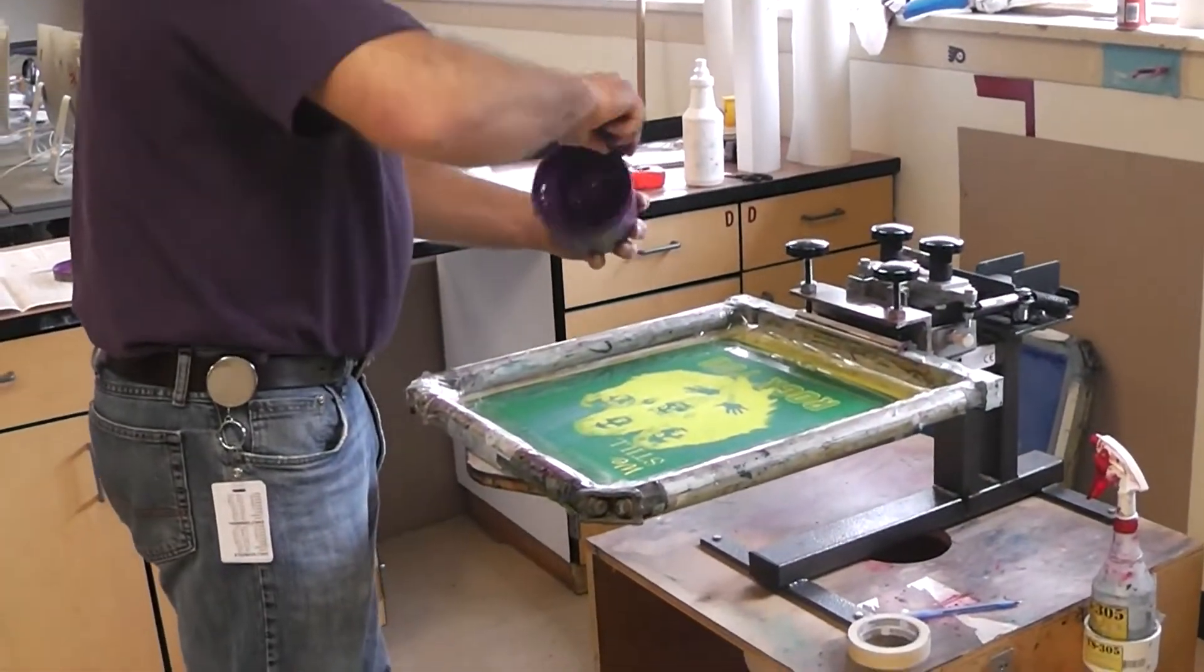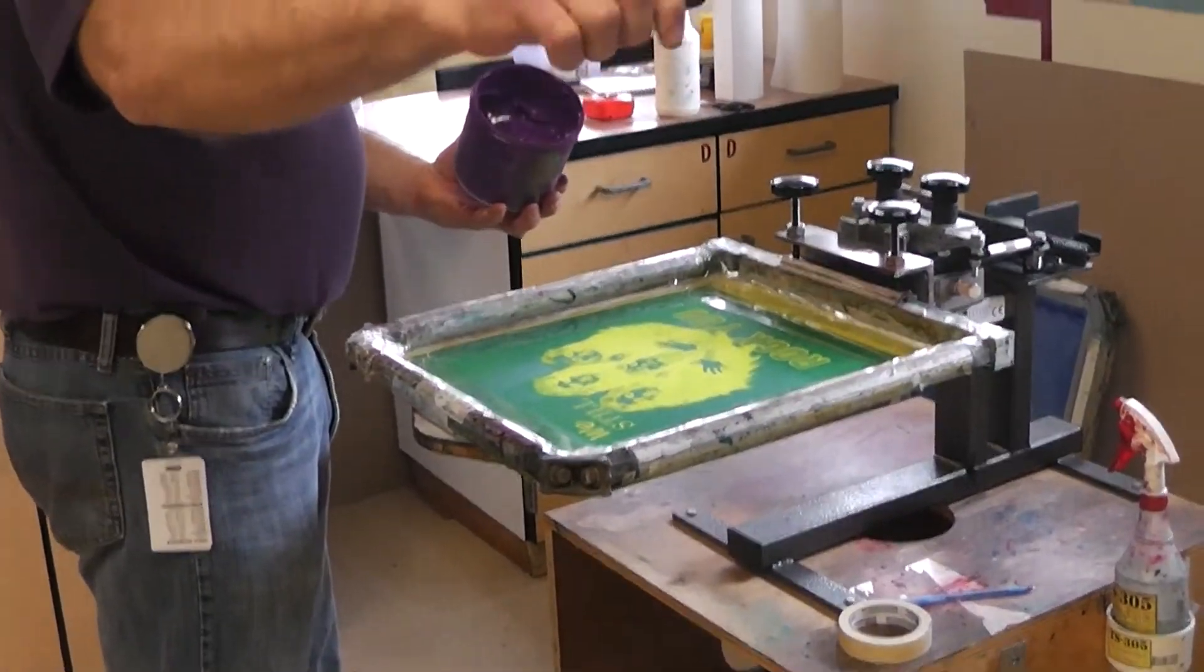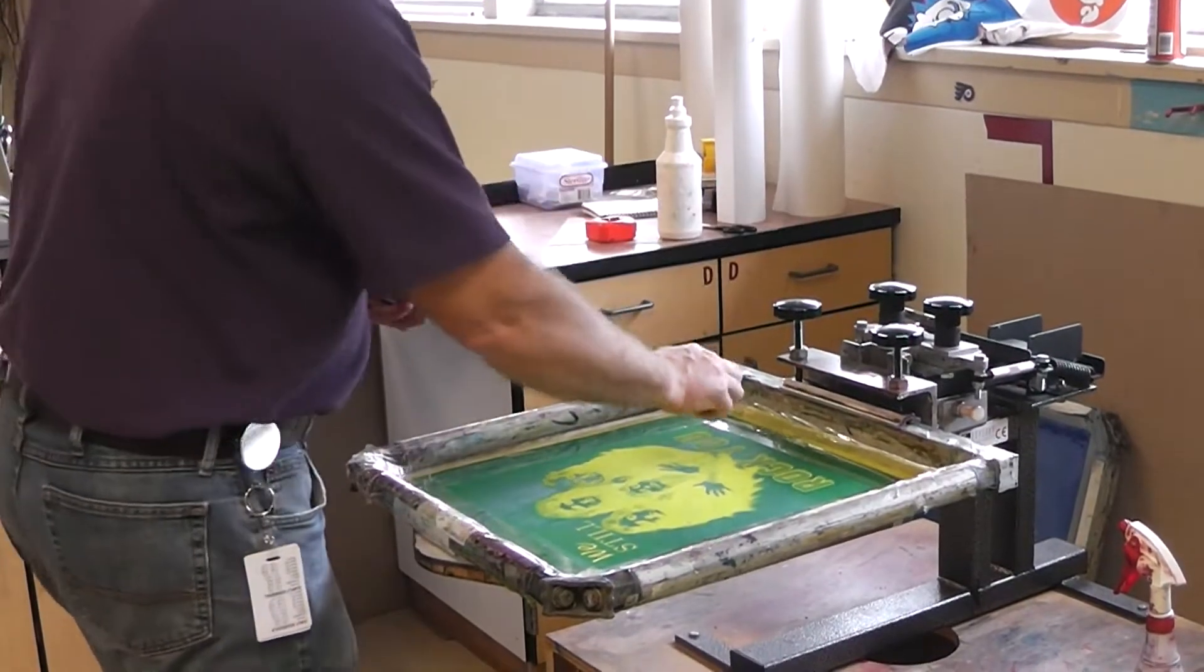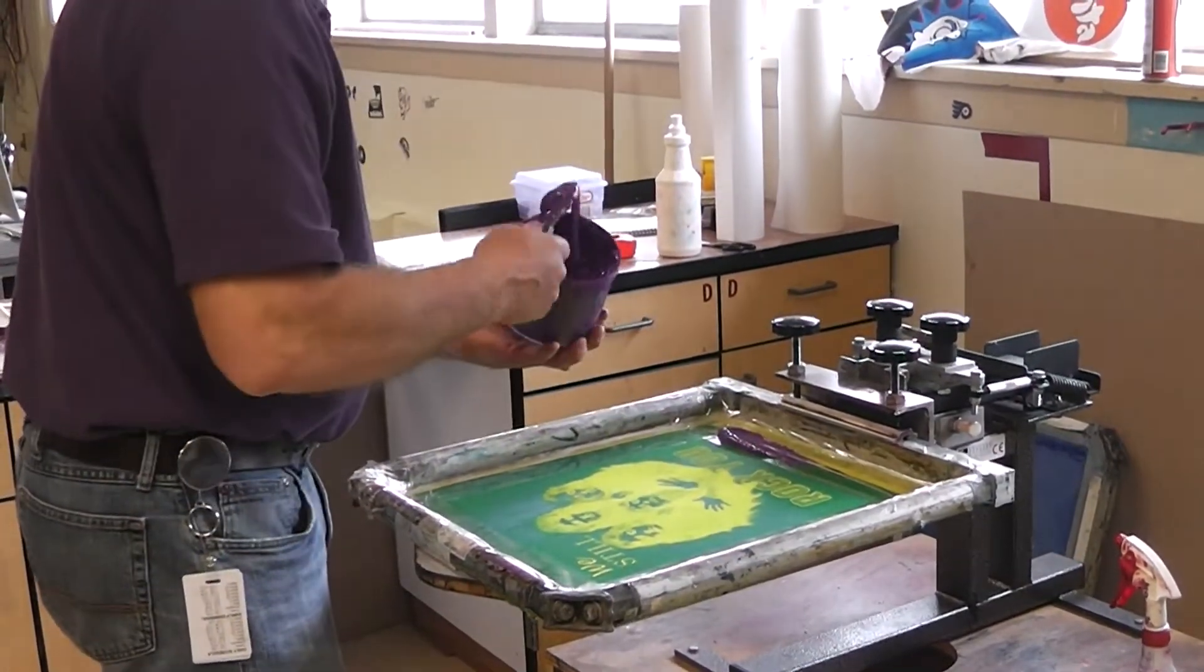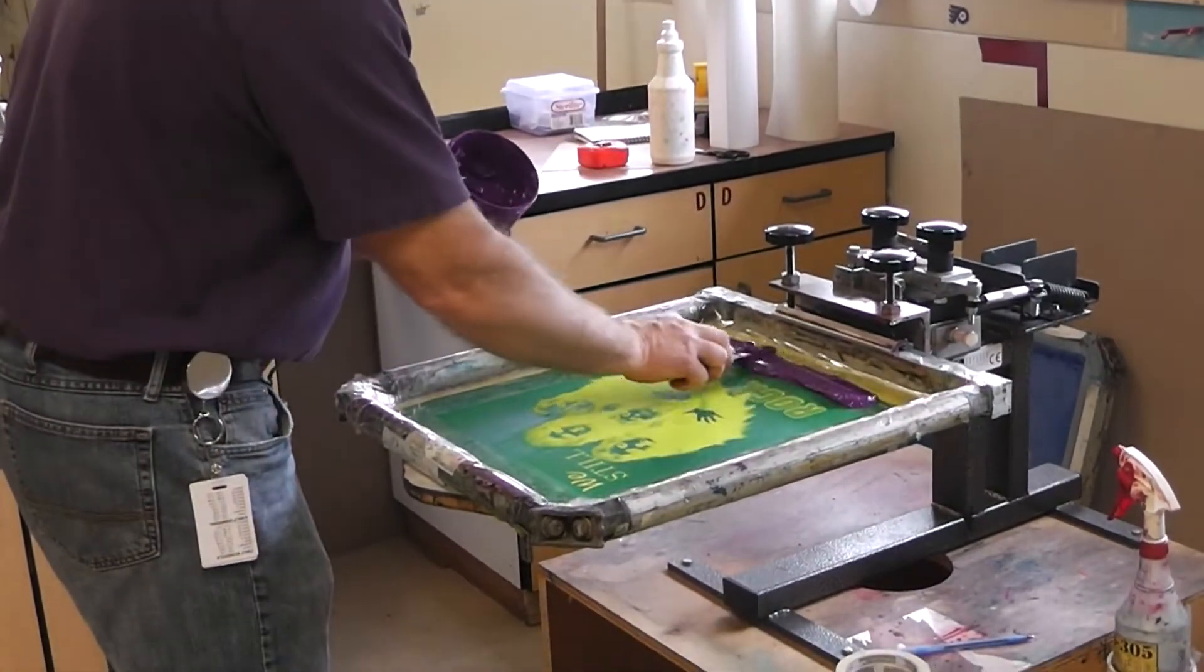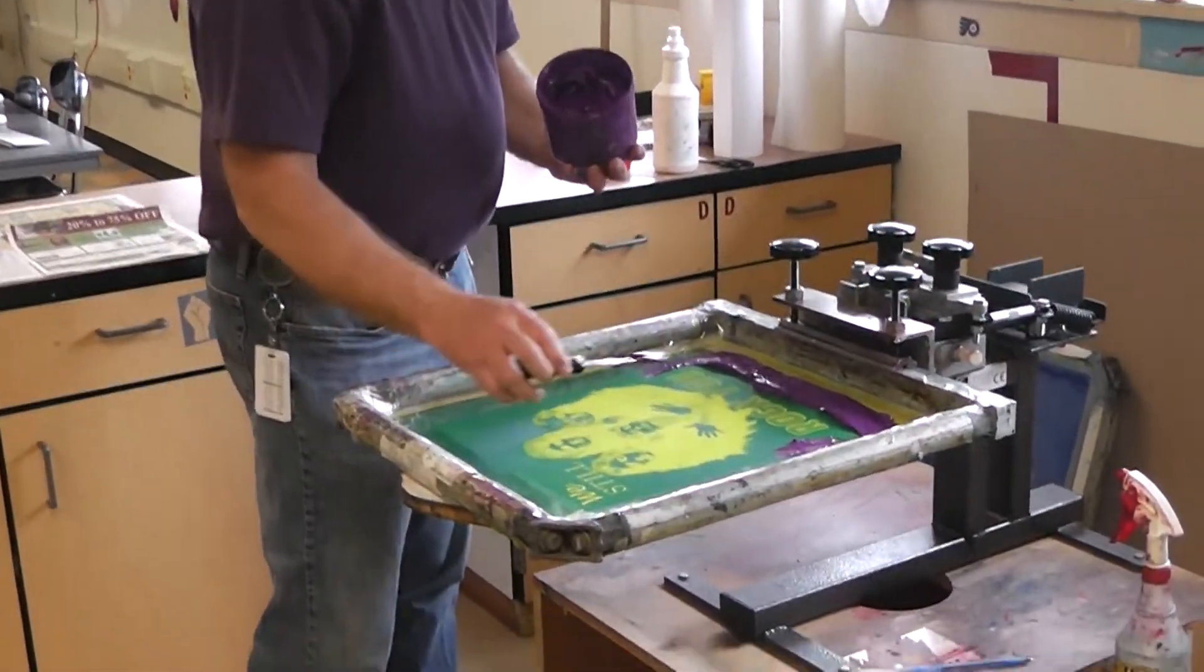Take your ink knife. I like to call it the spaghetti twirl. If I twirl my ink, I should be able to control it. And spread it out like peanut butter. Like you're making a peanut butter and jelly sandwich. Spreading the peanut butter on the bread. Nice and flat with the ink knife.